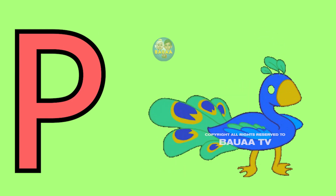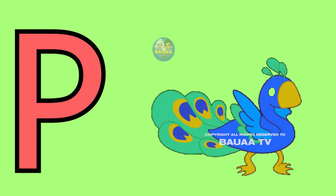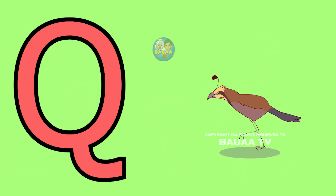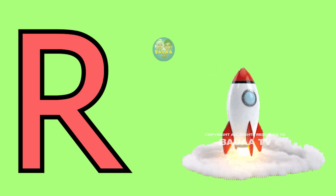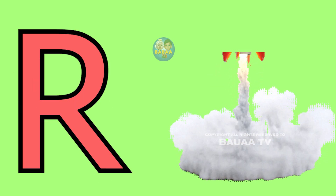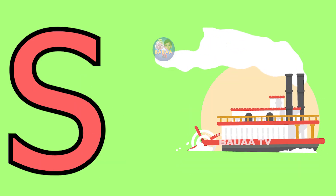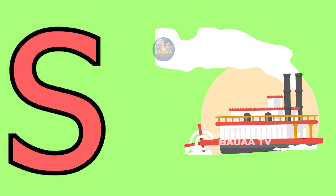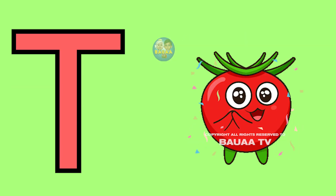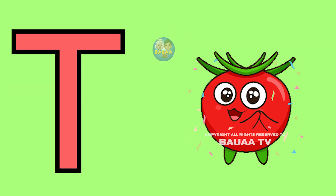B for peacock, Q for quill, R for rocket, S for ship, T for tomato.